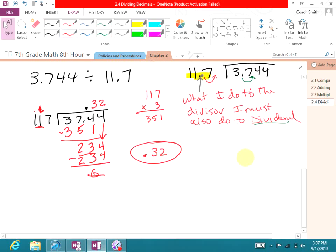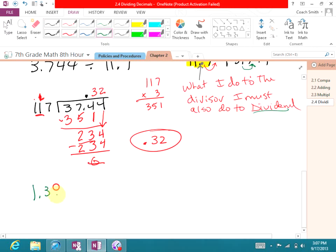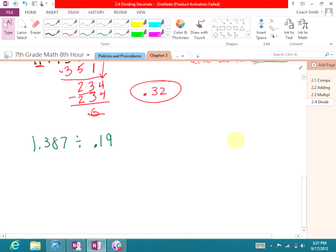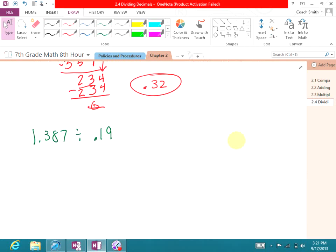Let's try this one on your own. 1.387 divided by 0.19. Try that on your own, and then we'll, I'll give you a couple of minutes. This one would be 0.19 into 1.387. I have to move the decimal two places to the left. Same thing there. Then you've got 19 into 138.7.